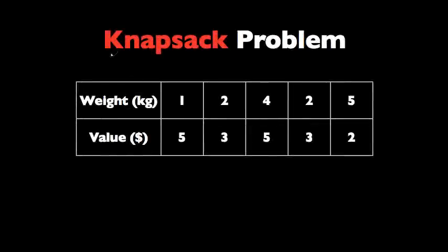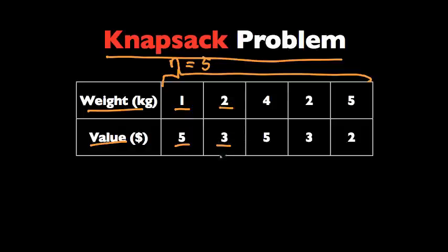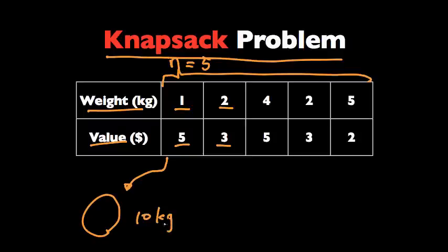Let me explain what the knapsack problem is first. We have a certain number of items — let's say N items, or 5 items in this case. Each item has an associated weight and value. So the first item weighs 1 kg and is worth $5, and the second item weighs 2 kg and is worth $3. The problem is we're trying to decide which items to put in our knapsack, which can only carry a certain amount of weight — let's say 10 kg. We are trying to maximize the total value we carry.